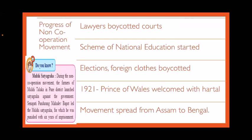Progress of the Non-Cooperation Movement. Many lawyers like Motilal Nehru and Chitranjan Das boycotted courts by giving up their practice. With the boycott of schools and colleges, a scheme of national education was started and many national schools, colleges, and universities were established. There was boycott of elections and bonfires of foreign clothes, causing import of foreign clothes to decrease. In 1921, the Prince of Wales came for a visit and was welcomed everywhere by hartals — with lonely roads and closed shops. The movement spread from planters in Assam to rail workers in Bengal.